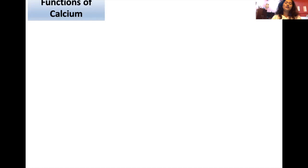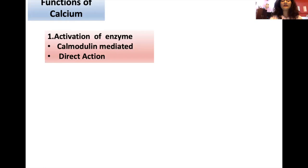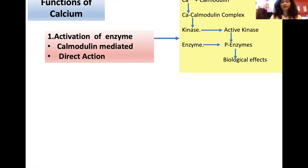One important role of calcium is activation of enzymes. Enzyme activation can occur in two ways: calmodulin-mediated action or direct action. In the calmodulin-mediated mechanism, calcium binds with the tetrameric protein calmodulin to form a calcium-calmodulin complex. This complex activates protein kinases, which phosphorylate enzymes, leading to biological effects.